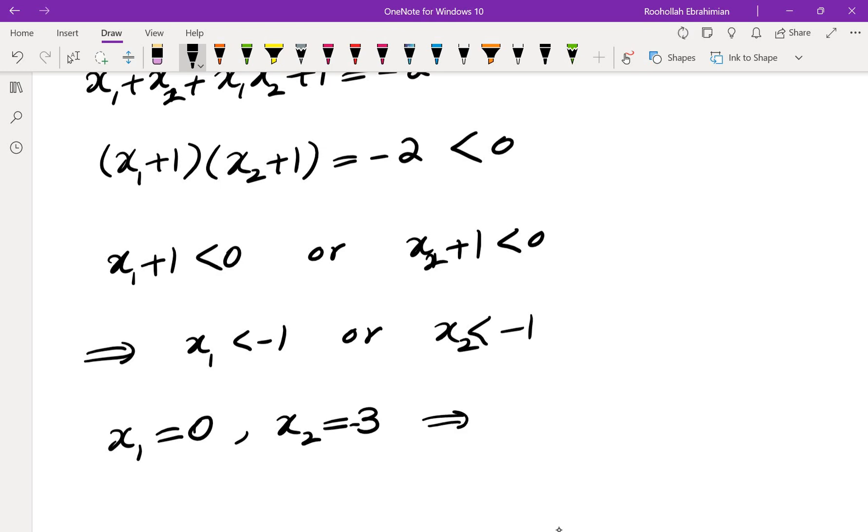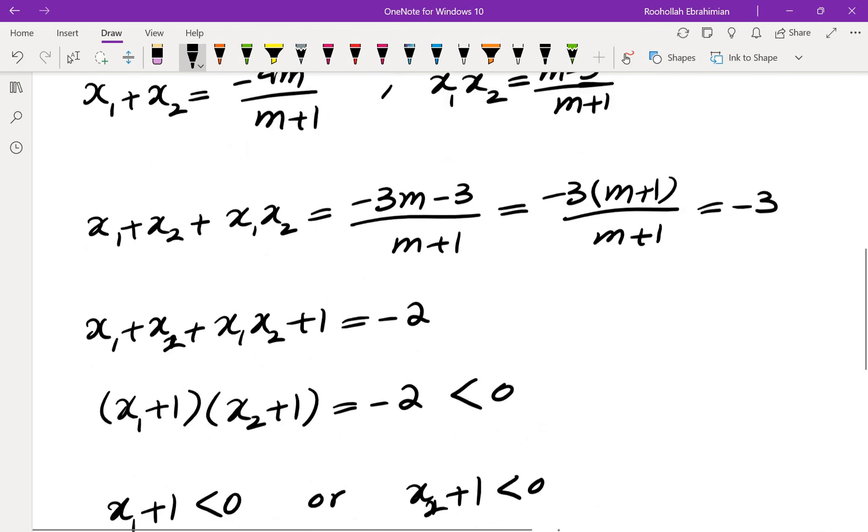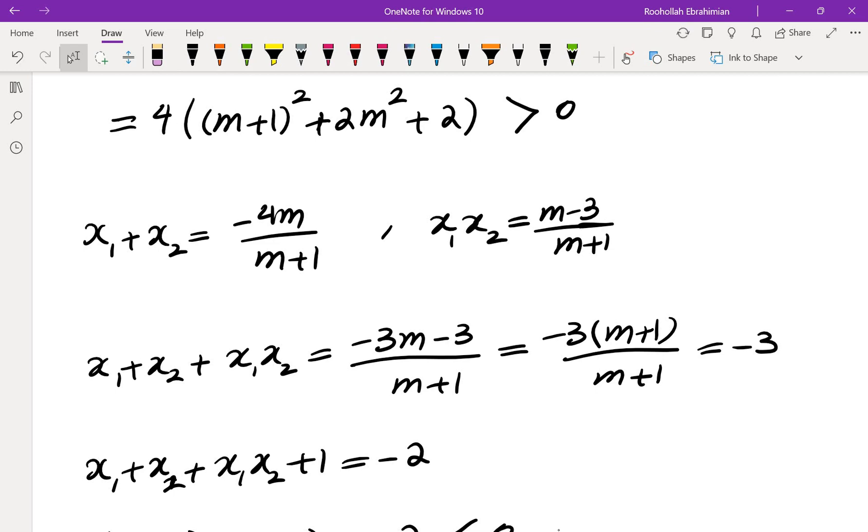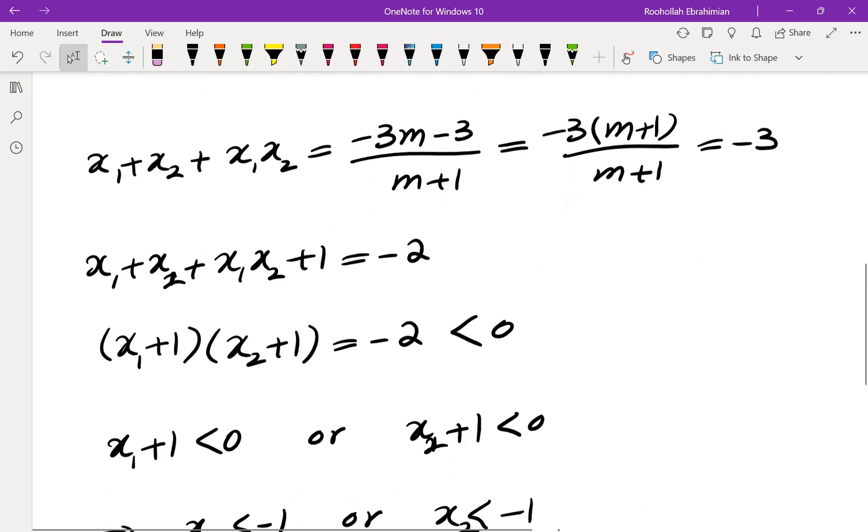And if you do that you'll get (0+1)(-3+1) = -2 which does satisfy that equality. Now let's see if there is in fact an m that satisfies this. So it is possible for some m that gives us 0 and negative 3.